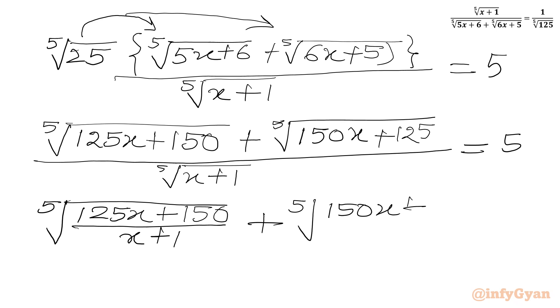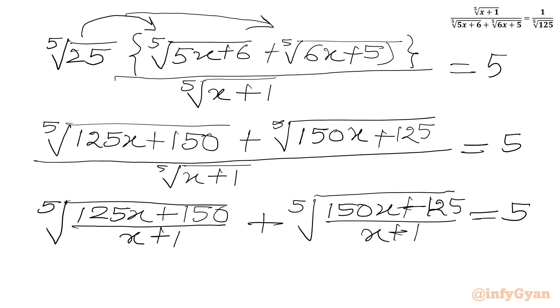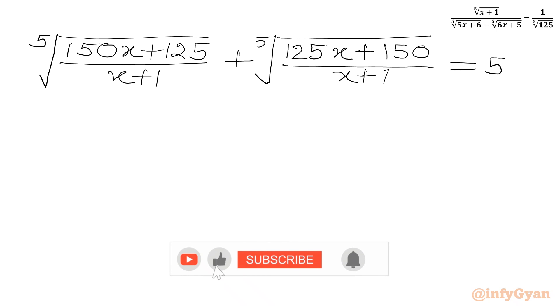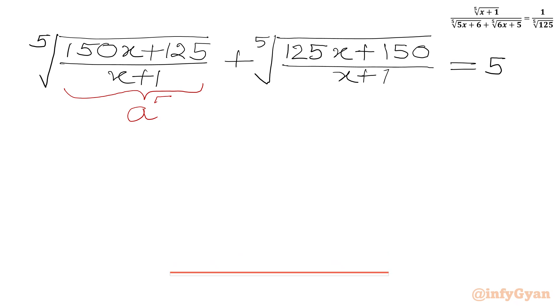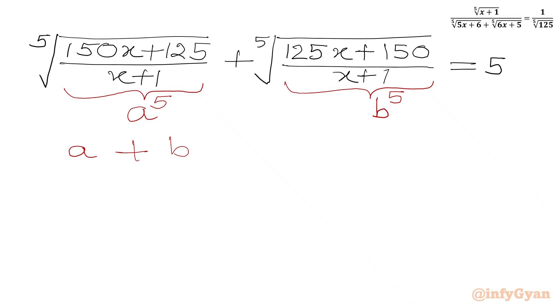So we arrive at the expression with numerator terms (150x+125) and (125x+150) over (x+1) on the LHS, and RHS is 5. Now I will use substitutions. Let us say the first radicand equals a to the power 5, and the second radicand equals b to the power 5. So I can write the 5th root of a⁵ plus the 5th root of b⁵, which gives a plus b equal to 1. This is equation number 1.